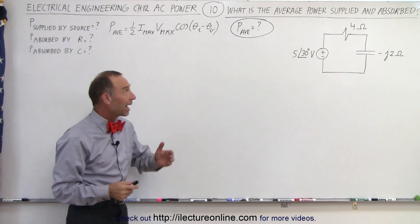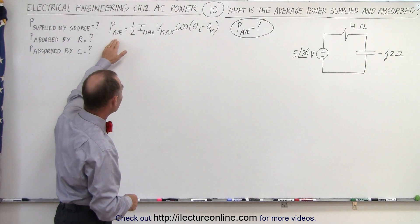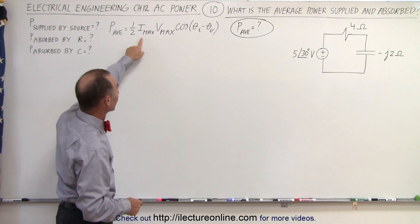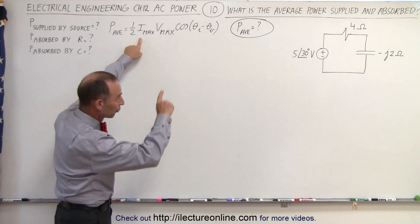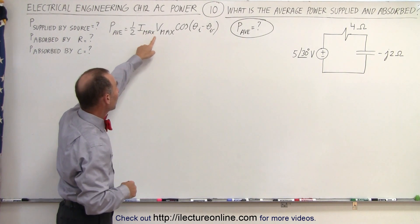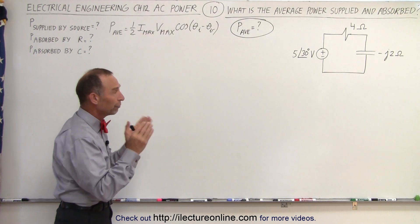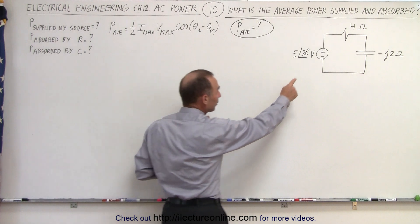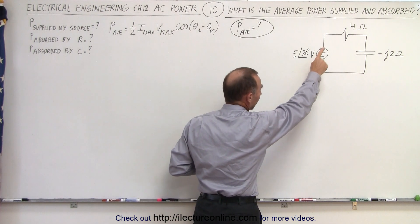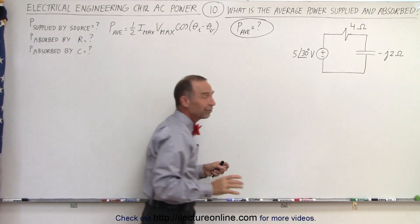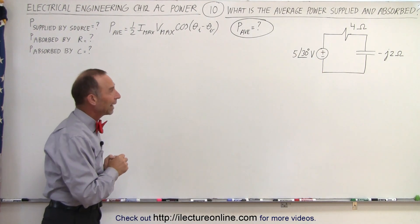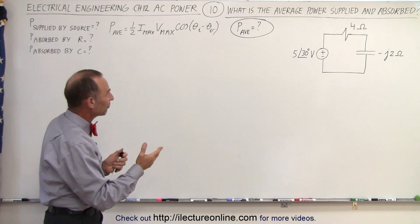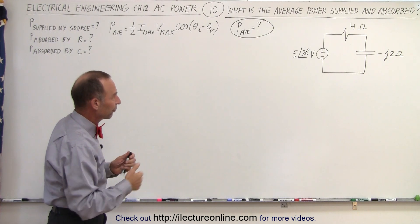Here we have the equation to find the average power. In each case, we need to know the current through each of the components and the voltage across each of the components. We already know the voltage across the power supply, but we still need to find the voltage across the resistor and across the capacitor. So let's start with finding the current first.